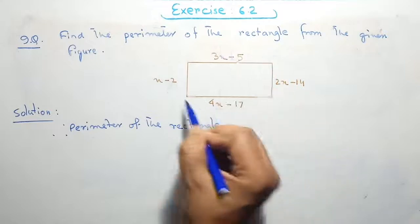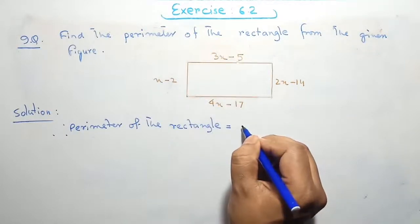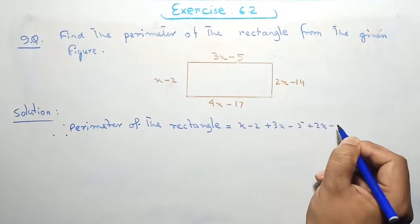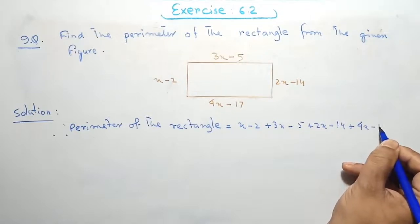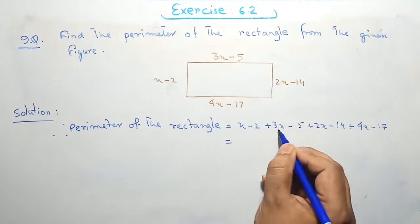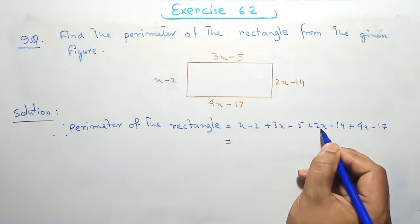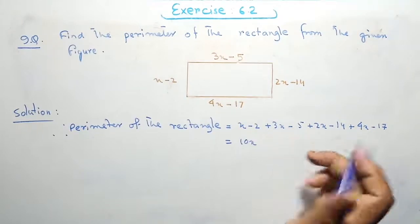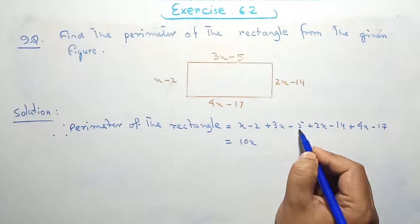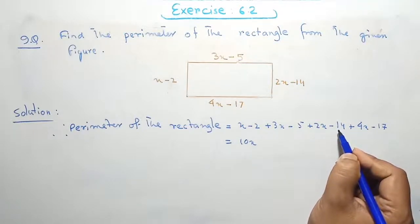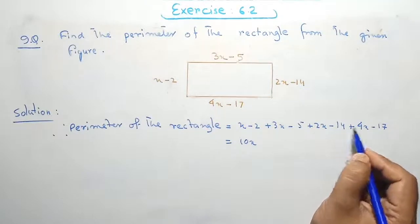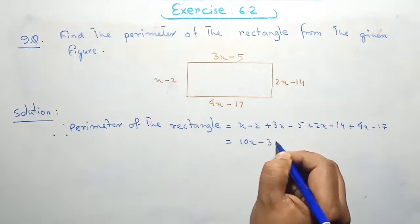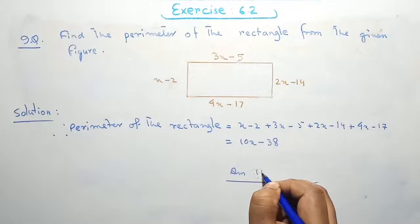We add all the expressions: x minus 2, plus 3x minus 5, plus 2x minus 14, plus 4x minus 17. For the x terms: x plus 3x equals 4x, plus 2x equals 6x, plus 4x equals 10x. For the constants: minus 2 minus 5 equals minus 7, minus 7 minus 14 equals minus 21, minus 21 minus 17 equals minus 38. Therefore, the answer is 10x minus 38.